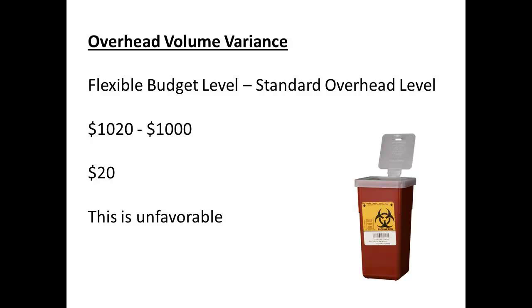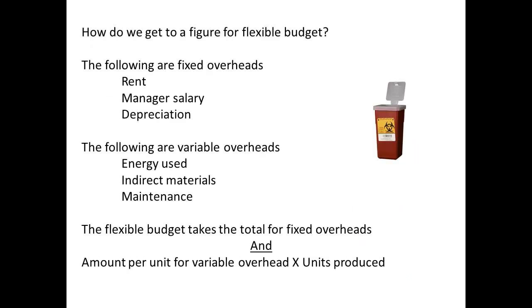To determine a flexible budget, we separate costs for fixed overheads such as rent, depreciation, and any supervisor salaries, from the variable overhead that includes items such as energy used, indirect materials used, and maintenance costs. The flexible budget is then a fixed overhead amount plus the amount per unit for variable overhead, multiplied by the number of units produced.